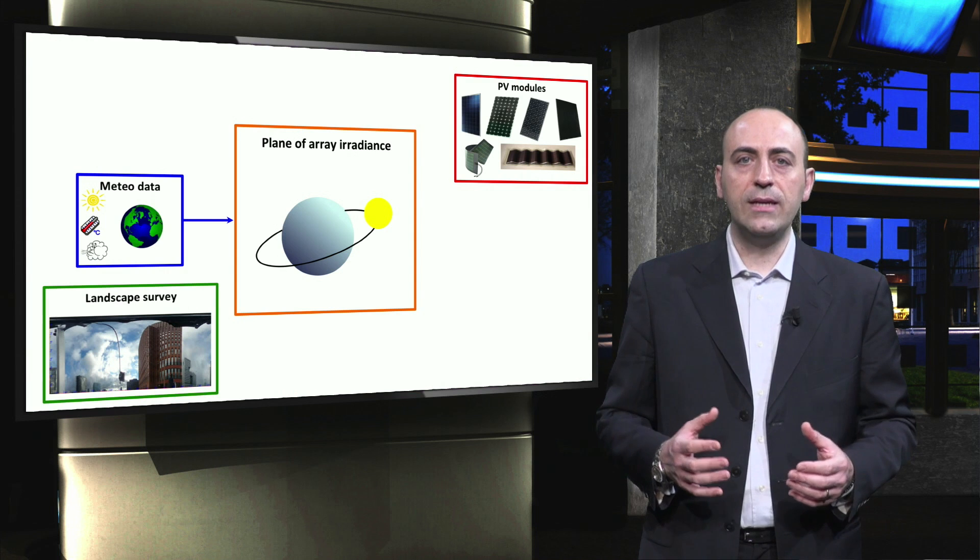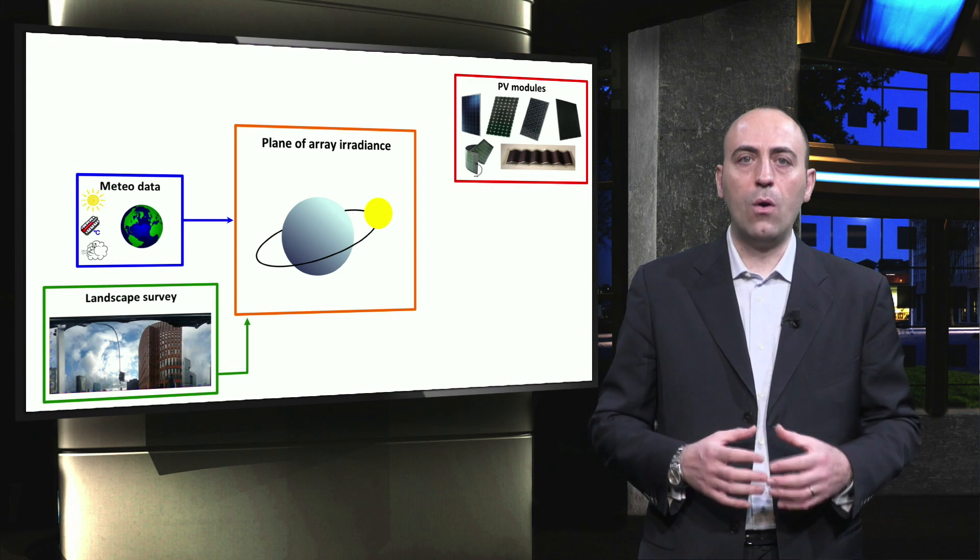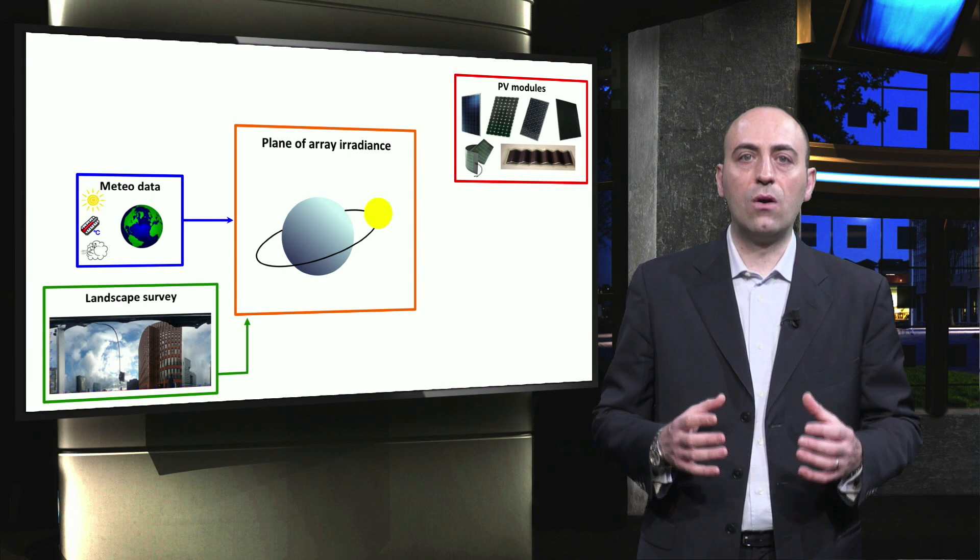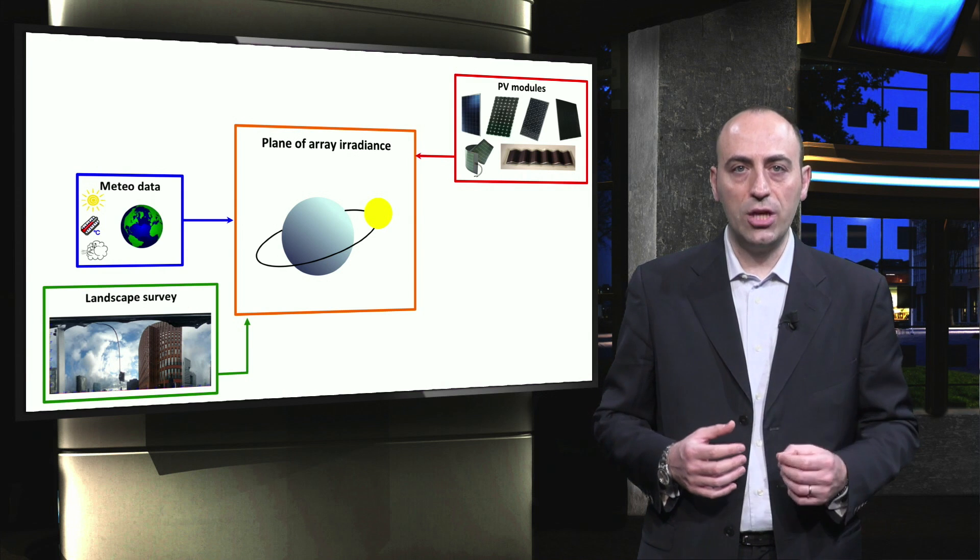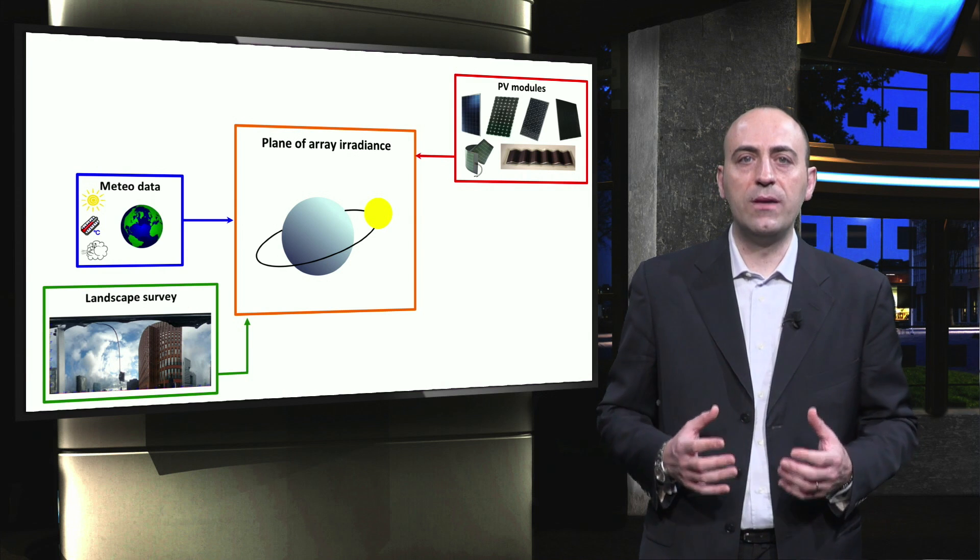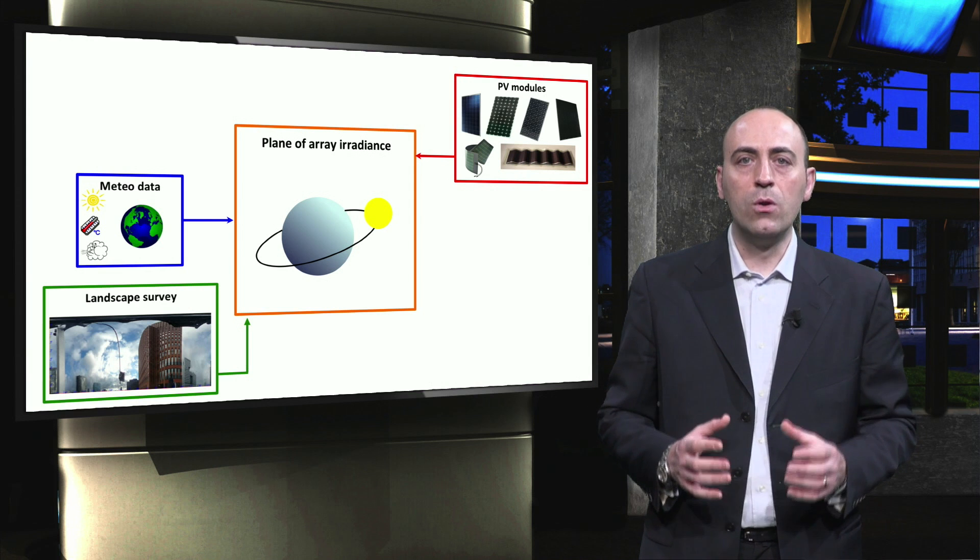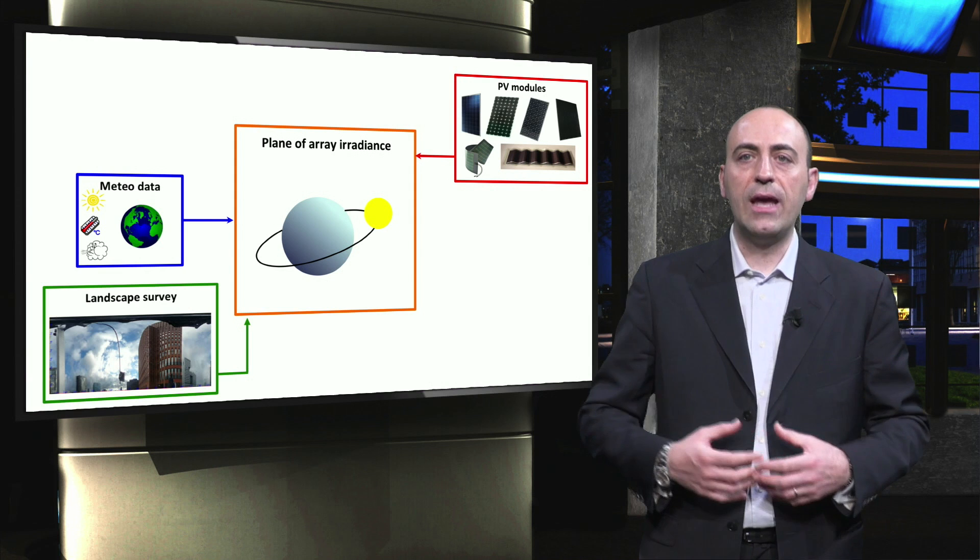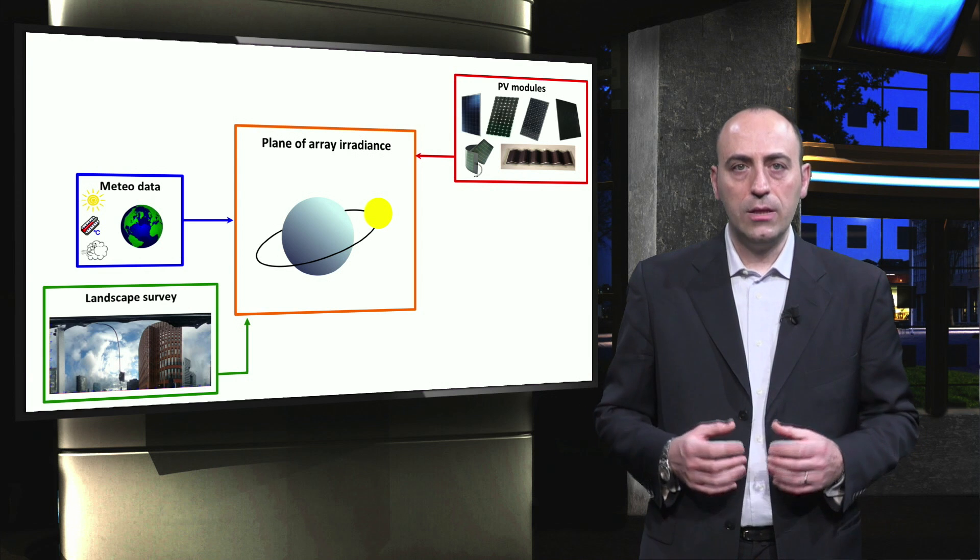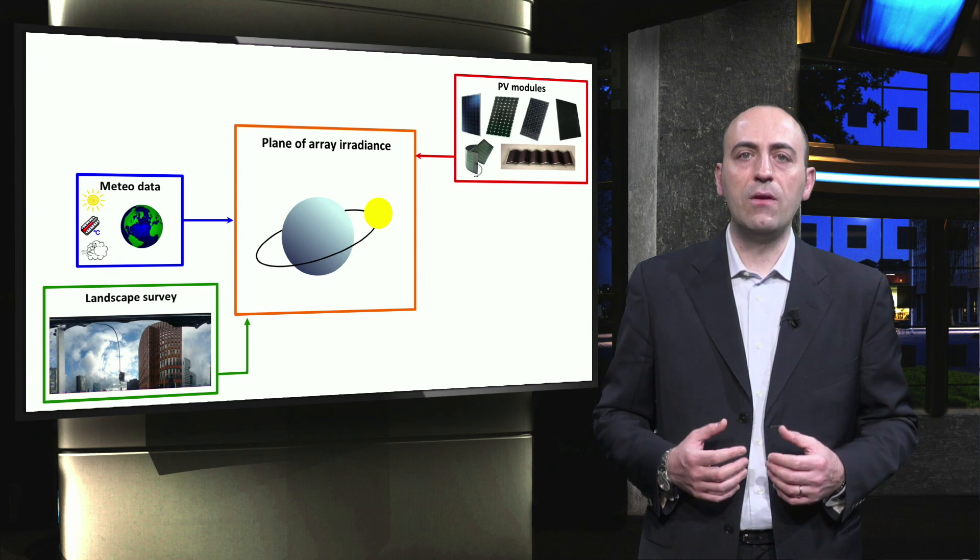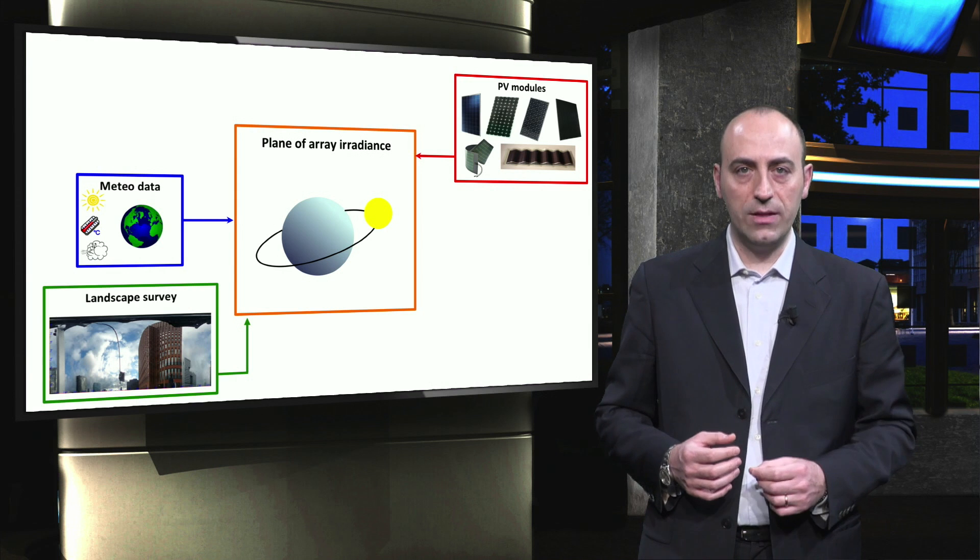The meteorological data and the surrounding landscape all influence the incident irradiance on a module of a certain shape and size. In order to estimate the irradiance incident on a module at any given time, we also need to consider the tilt and orientation of the module. The incident solar irradiance on a PV array is also known as the plane of array irradiance.